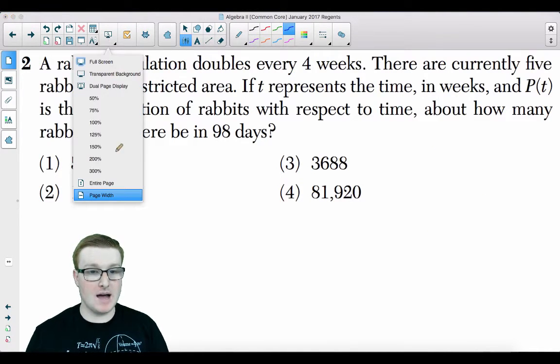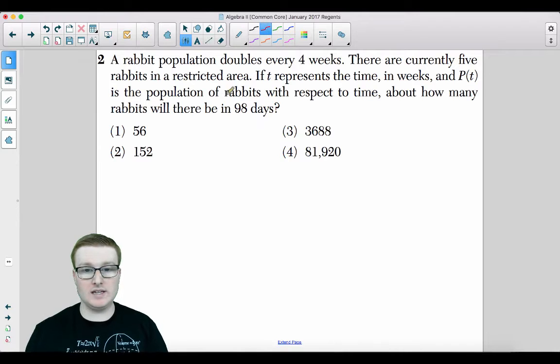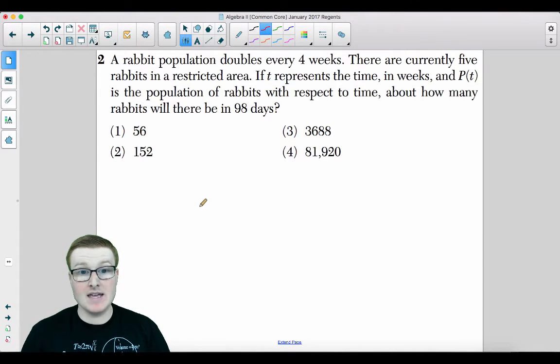Moving on to number 2. A rabbit population doubles every 4 weeks. There are currently 5 rabbits in a restricted area. If t represents the time in weeks and P(t) is the population of rabbits with respect to time, about how many rabbits will there be in 98 days?